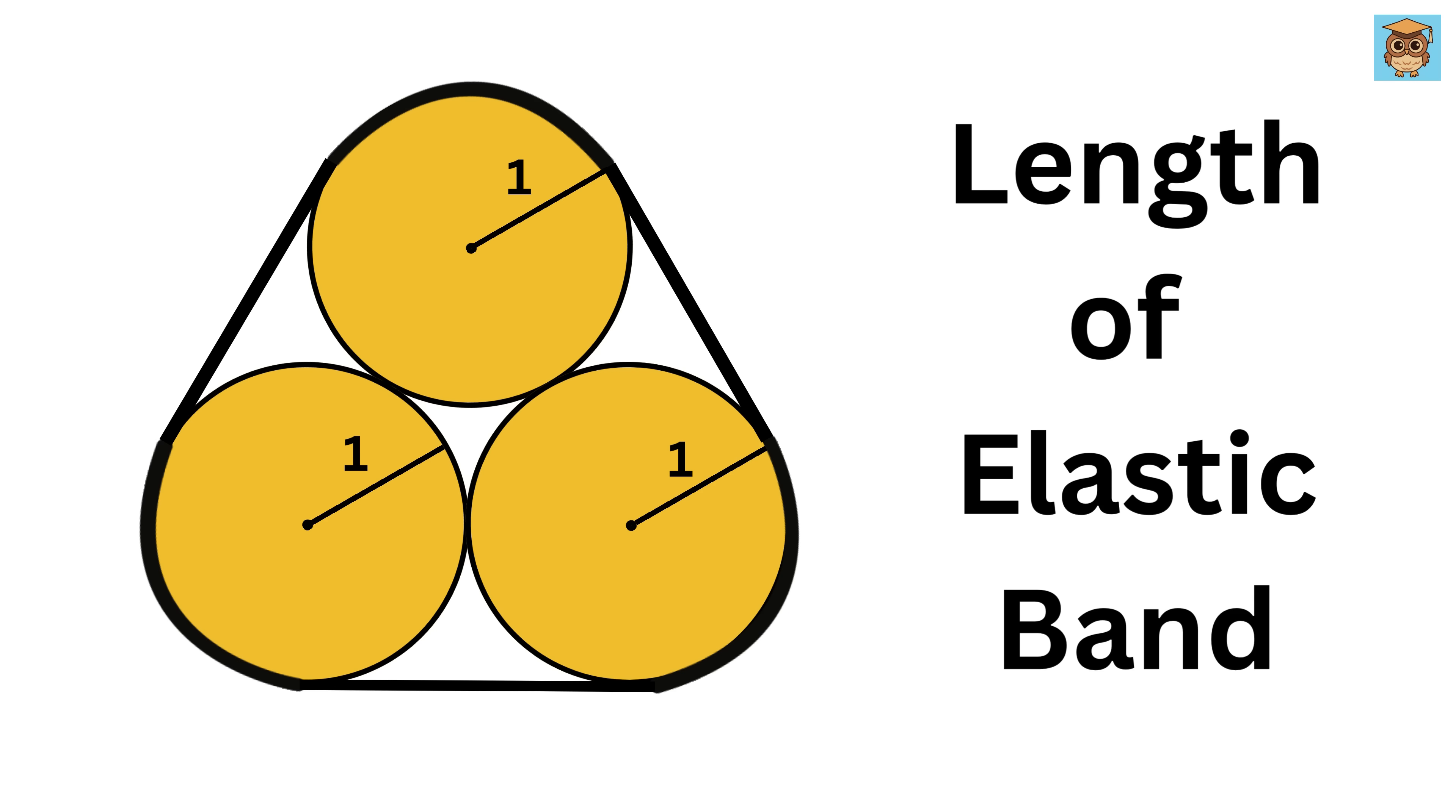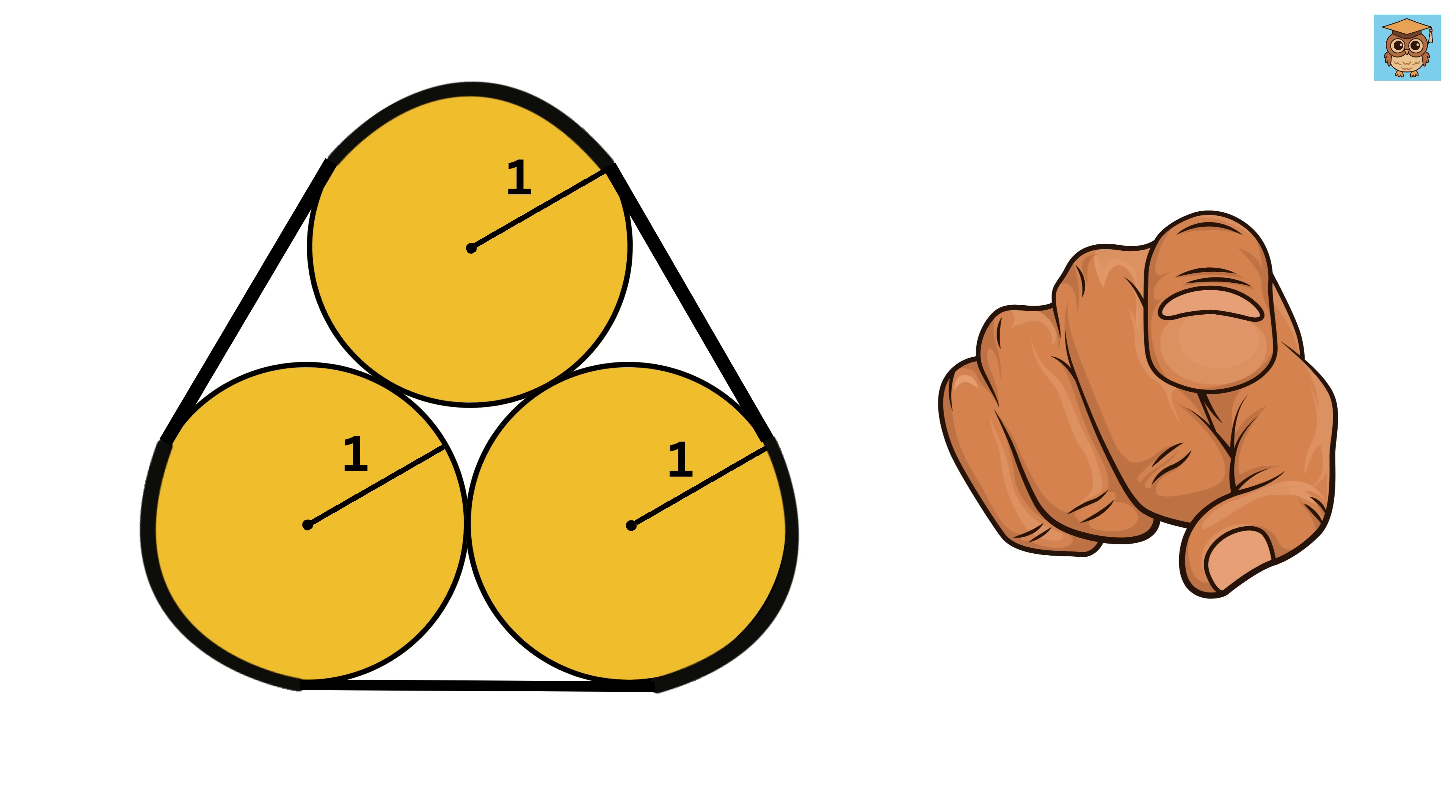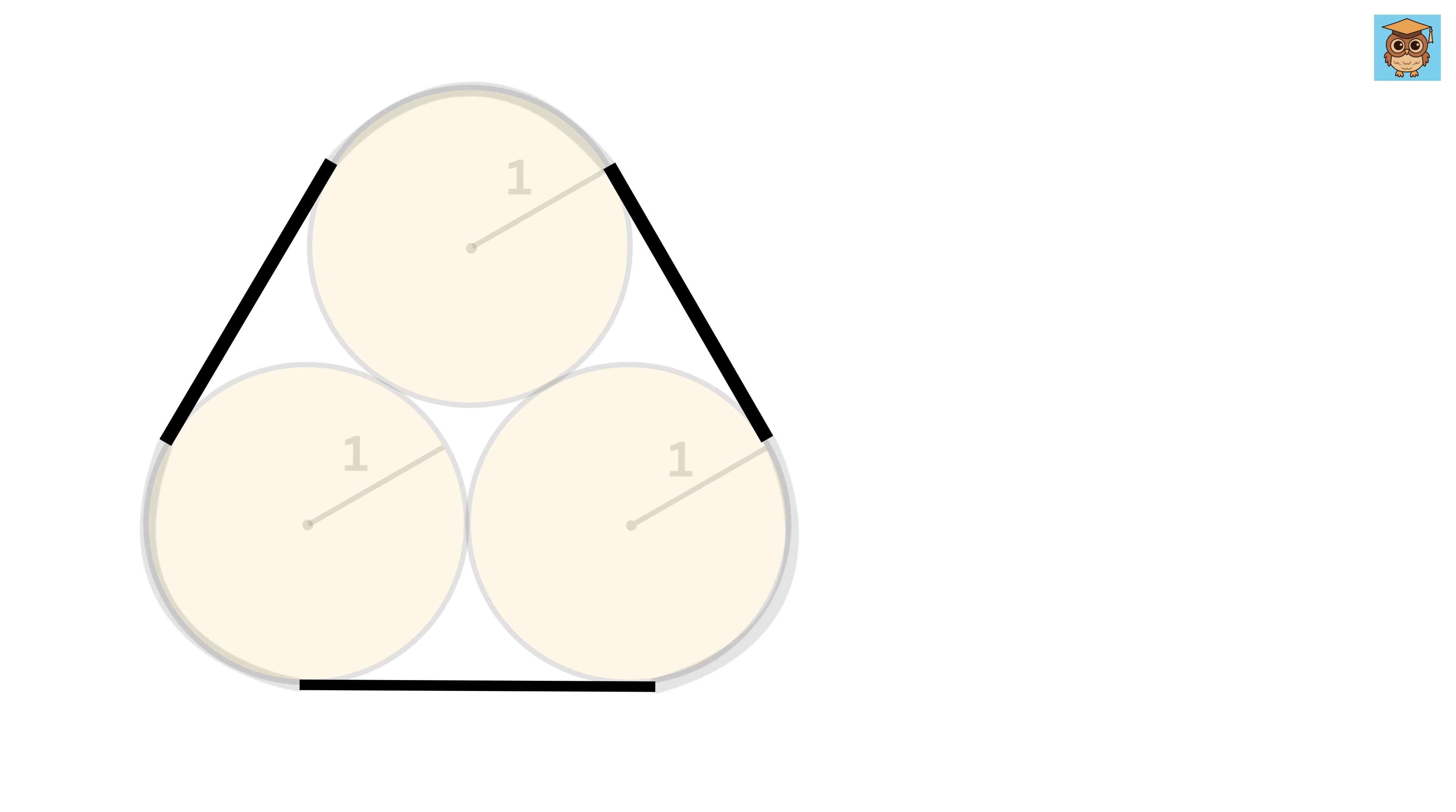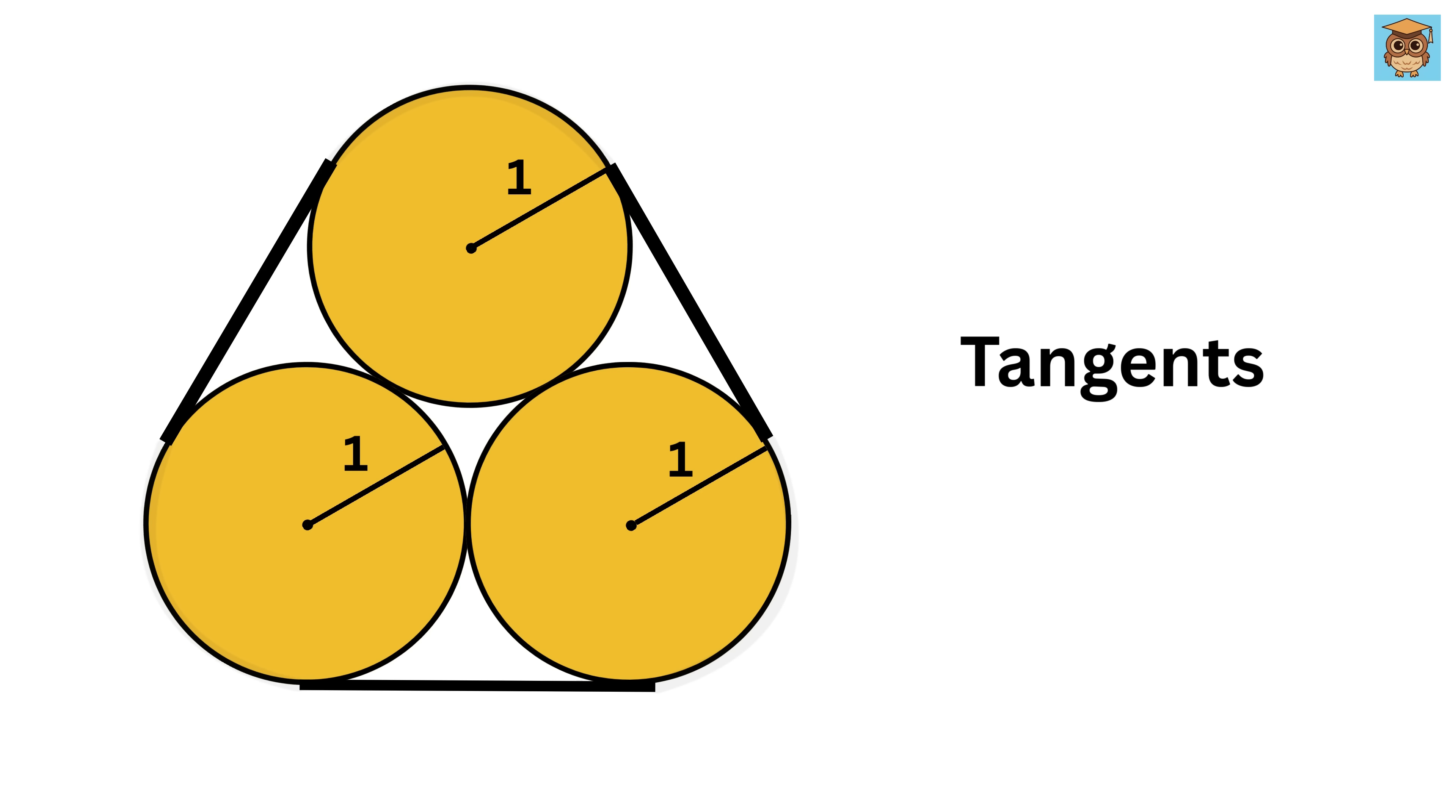When we place an elastic band around these three circles, the band will form a shape that consists of three straight line segments and three curved segments. The straight segments are the tangent lines between circles and the curved segments follow the outline of each circle.